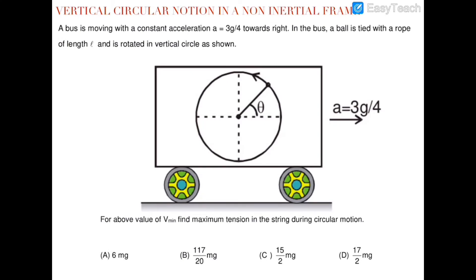In this video we are discussing vertical circular motion from a non-inertial frame of reference. This is similar to the case we have already discussed — where an external constant force is applied on vertical circular motion and we find the minimum projection velocity — but the only difference is that we are standing inside an accelerated frame.